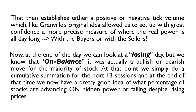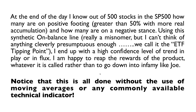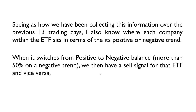At the end of the day, we know out of 500 S&P 500 stocks how many are on positive footing — with more real accumulation — and how many are on negative stance. Using this ETF Tipping Point line we end up with a high confidence level of what's going to happen. Notice this is all done without the use of moving averages or any commonly available technical indicator. Over 13 trading days, we also know where each company within the ETF sits in terms of its positive or negative trend. When it switches from positive to negative balance — more than 50% on a negative trend — we have a sell signal, and vice versa.